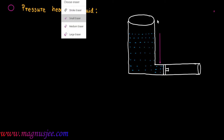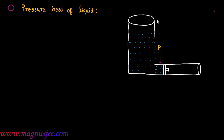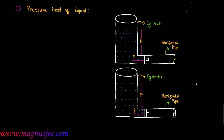The pressure difference P, which is equal to P2 minus P1, is also acting towards right in the liquid placed in the horizontal pipe. This is the vertical cylinder in which liquid is placed, and this is the horizontal pipe connected at the bottom of the cylinder. Due to the pressure difference P acting in the horizontal pipe, the piston will move to this position.